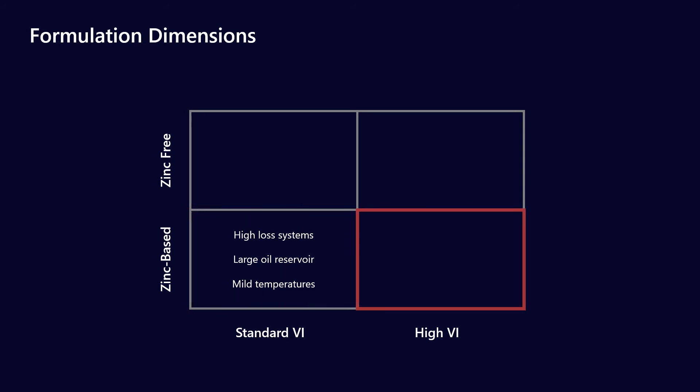Where you might need something with a bit more VI is really kind of typical industrial plant uses. It might see a wide operating temperature range but there isn't really a strong driver to go to zinc free because you can afford a much larger oil reservoir and there's no real concerns about it getting to 80 to 90 degrees. It probably operates around let's say 60.